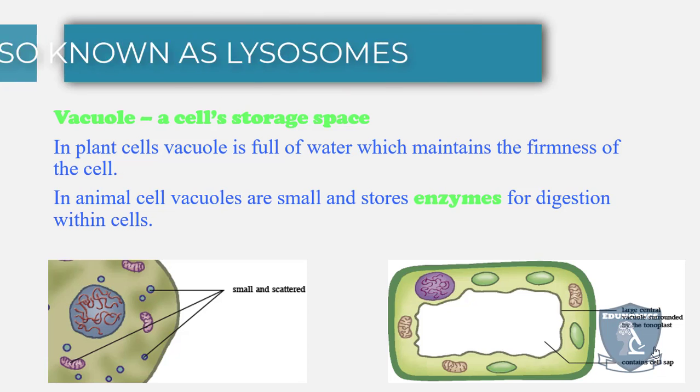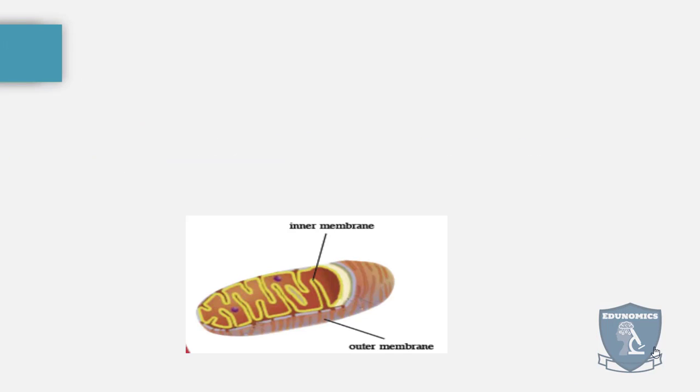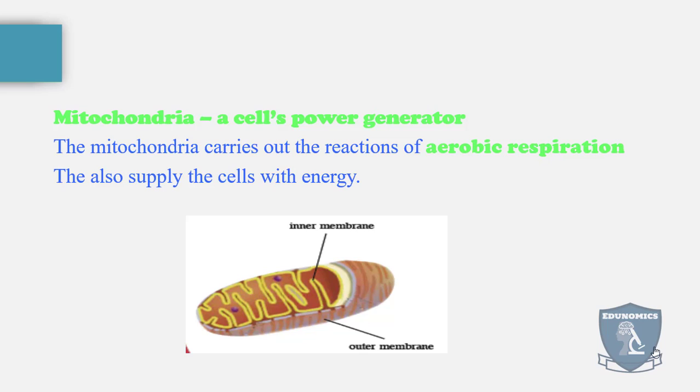Next is the mitochondria, known as the powerhouse of the cell or the power generator. The mitochondria carries out reactions of aerobic respiration and supplies the cell with energy in the form of ATP, adenosine triphosphate.